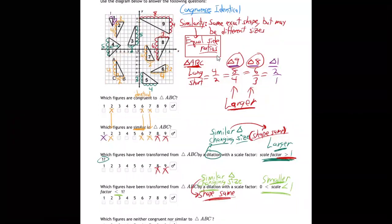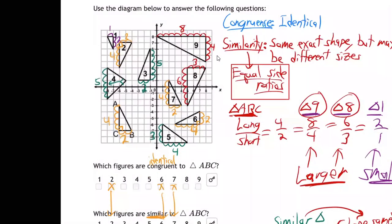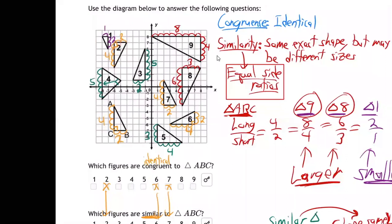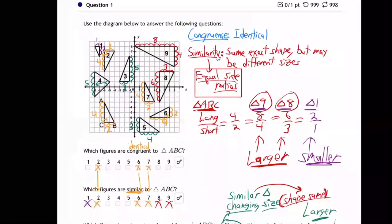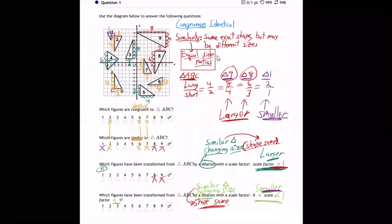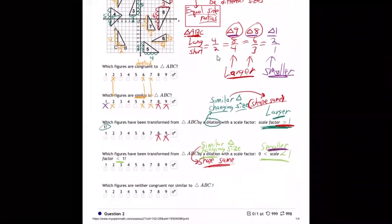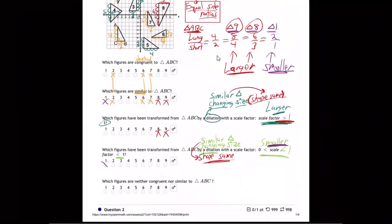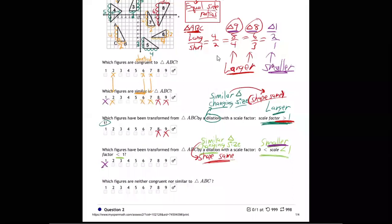For the next question — which figure is a smaller version? That's triangle one. Triangle one is two by one — that's the same ratio as ABC, but a smaller version. Two by one instead of four by two. It's a smaller version of the same thing, so our answer is triangle one.